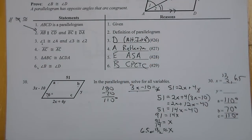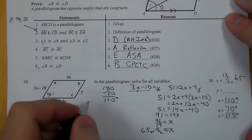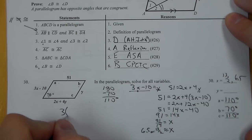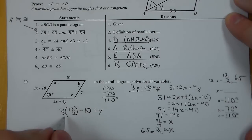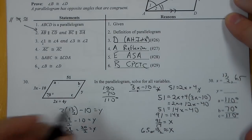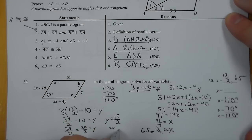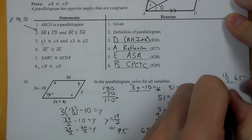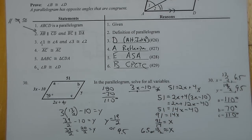Now we need to substitute that back in up here to find y. So I'm going to go 3 times 13 over 2 minus 10 equals y. That gives me 39 over 2 minus 10. Leaving this in fractional form, I can go 20 over 2, and y comes out to be 19 over 2, or that would be 9.5. So 19 over 2 or 9.5, depending on how it's written.